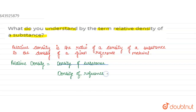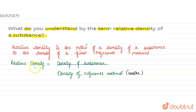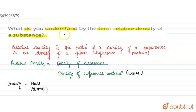The reference material is typically a liquid — here we take water. The substance can be anything like wood, iron, or any material. We know that density is equal to mass per unit volume.